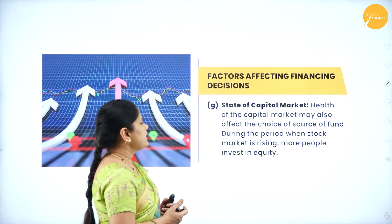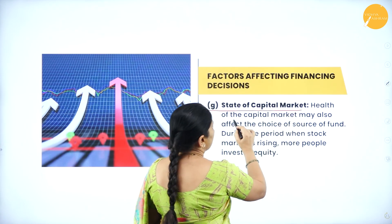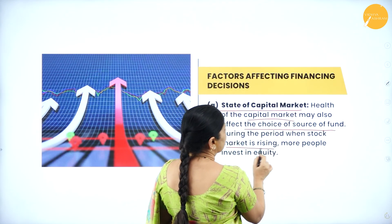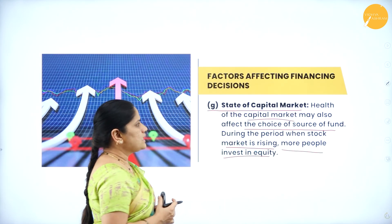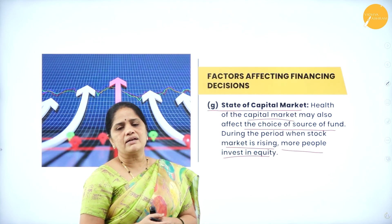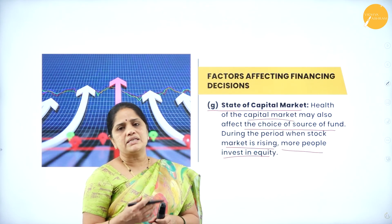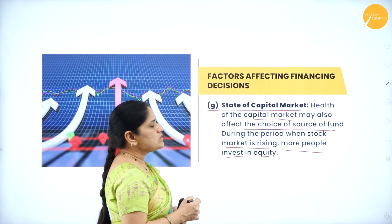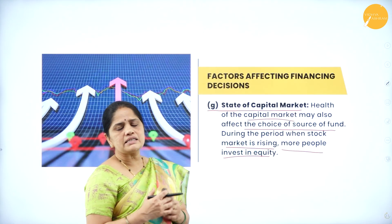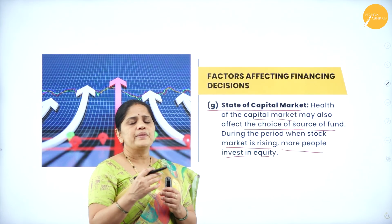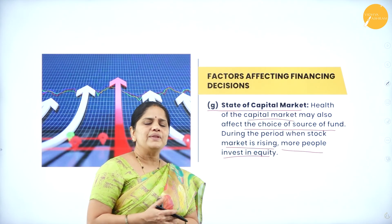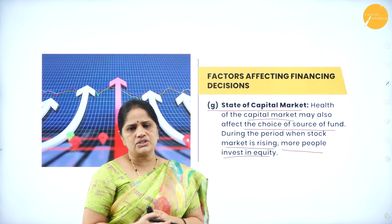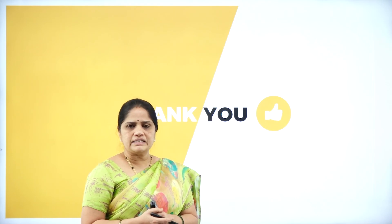The last factor affecting financing decisions is the state of the capital market. The health of the capital market may also affect the choice of source of funds. During the period when the stock market is rising, more people invest in equity. If the capital market is booming or the stock market sees a rising trend in share prices, then it will attract more and more people to invest in equity, as a result of which we can take the financing decisions. These are the various factors which affect the financing decisions.